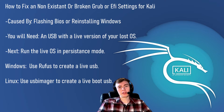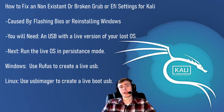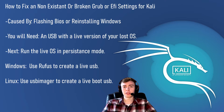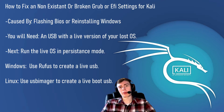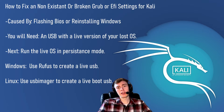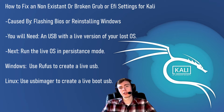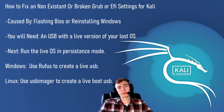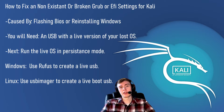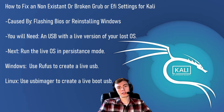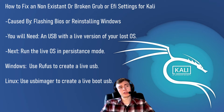The first thing you have to do is have a live or persistent version of Kali. You want to install this on a USB. If you have Windows, you're going to want to use Rufus to install it on a USB. If you have access to Linux, use a program called USB Imager in order to create a live boot USB.